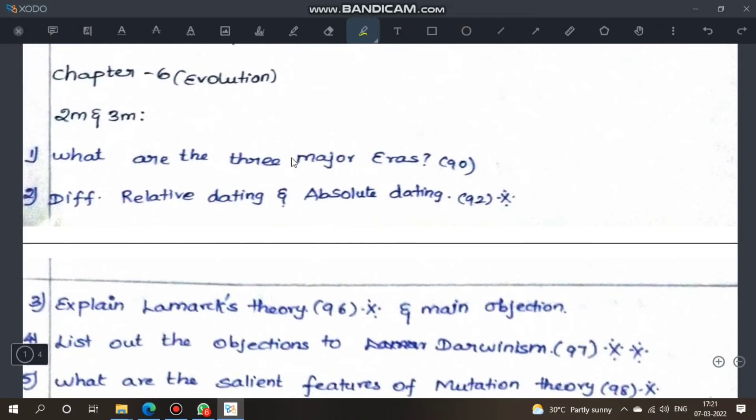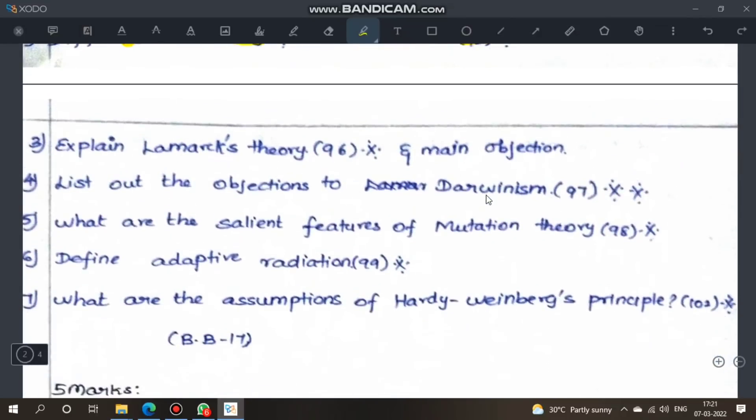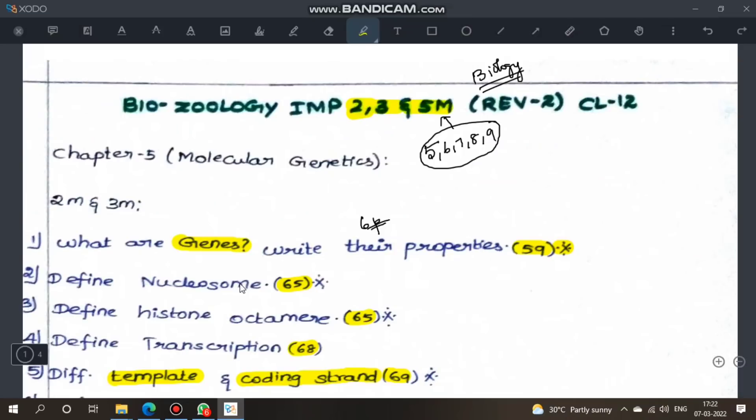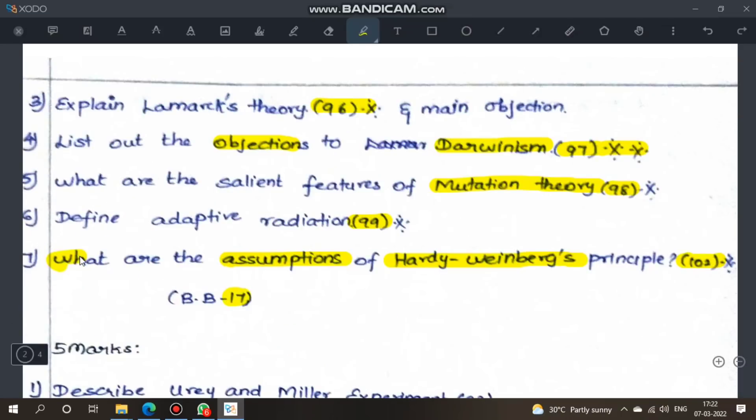Next, Chapter 6 Evolution. What are the three major eras and the classification, page 90. Second question, difference between relative dating and absolute dating, important, page 92. Third question, explain Lamarck's theory and main objection to Lamarck's theory. Very important, page 96. Theories are important questions: Lamarck theory, Darwinism, mutation theory, Hardy-Weinberg principle. Fourth question, list out the objections to Darwinism, very very important three mark question, page 97. Next, what are the salient features of mutation theory, very important, page 98. Define adaptive radiation, page 99. What are the assumptions of Hardy-Weinberg principle, page 102. Book question 17 is important.